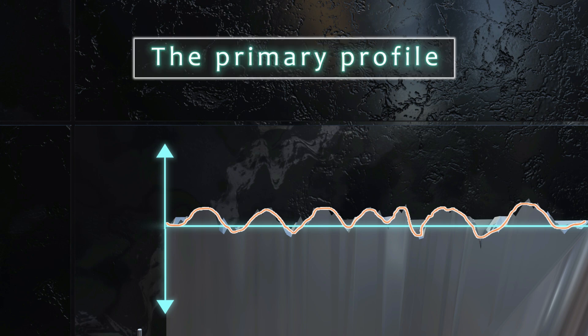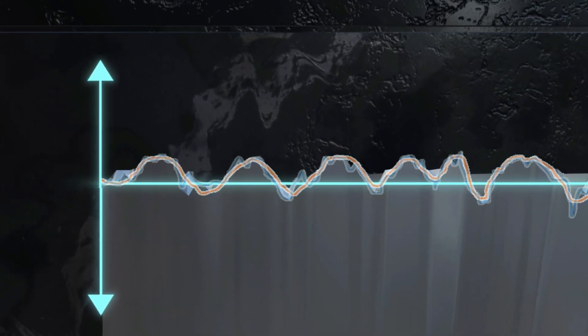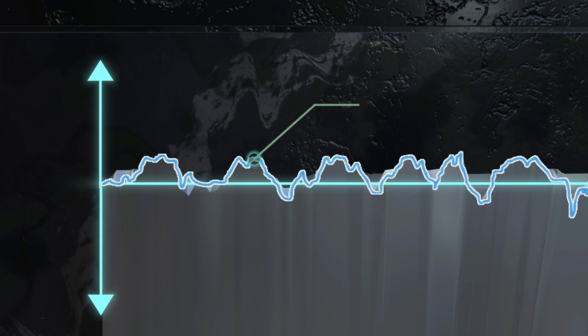We can see that it includes the larger deviations called waviness. And on this waviness profile, if we zoom even further, we find micro deviations. This is the roughness profile.